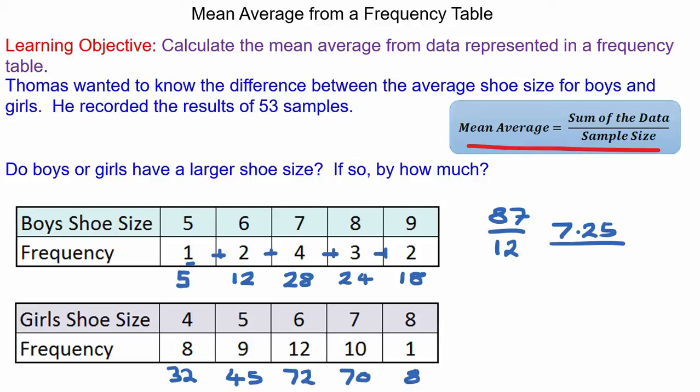So the total shoe size for all the girls would be two hundred and twenty-seven. Now the sample size is eight at nine at twelve at ten at one which is forty. So two hundred and twenty-seven divided by forty gives the average shoe size of five point six seven five.